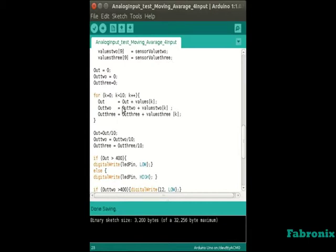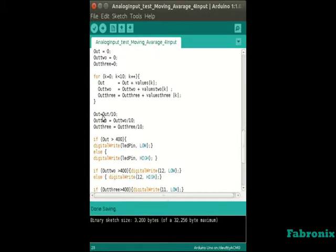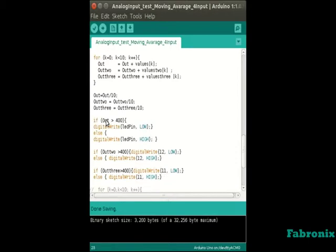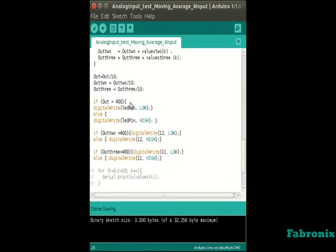Then, we calculate the sum of all values in the array and divide them by the number of elements to calculate the moving average. And compare the result with 400. If the result is greater than 400, the LED turns off. And if the result is less than 400, the LED turns on.